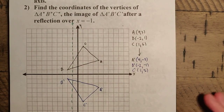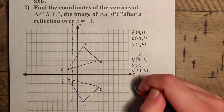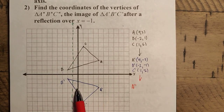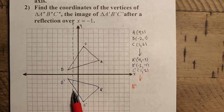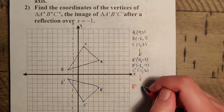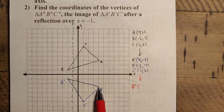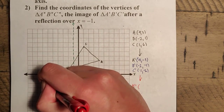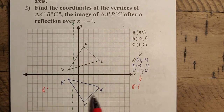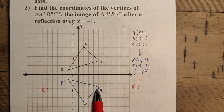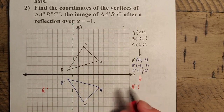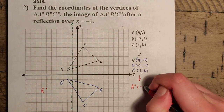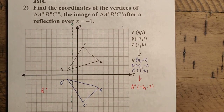Now it's just a matter of counting. A double prime: the point 4, negative 3 appears to be 5 units away from the mirror, so it's going to go another 5 in the opposite direction — 5 over here: 1, 2, 3, 4, 5. So A'' has moved over in that direction, 5 units to the left of negative 1, giving us negative 6, negative 3.